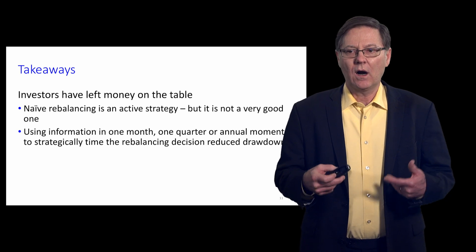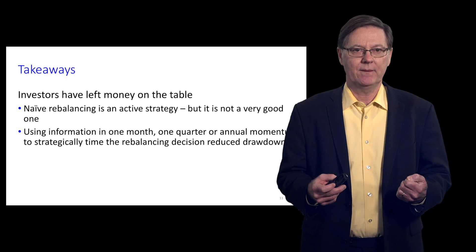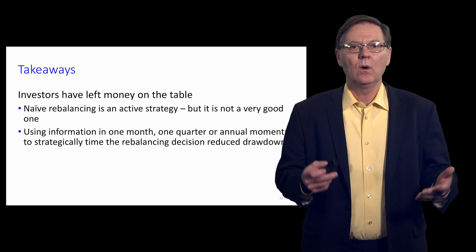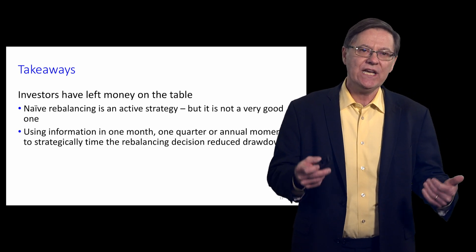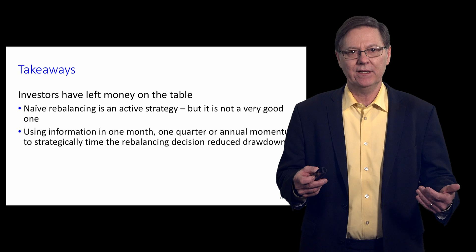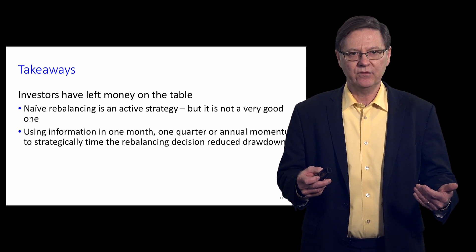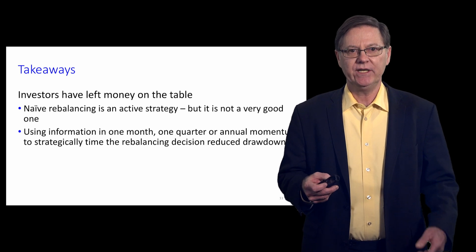Our simple message here is that there is important information in very simple trend signals—one month, one quarter, annual momentum—that can be used to strategically time the rebalancing decision. The goal here is to reduce drawdowns, and we offer some tools to actually achieve that goal.